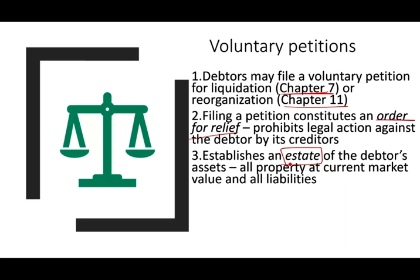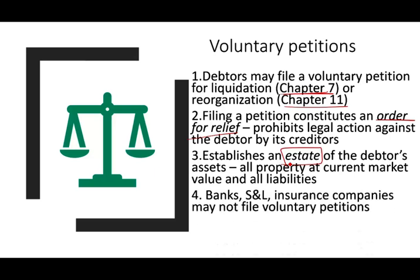Who cannot file for a voluntary petition for bankruptcy? Banks, savings and loans, and insurance companies may not file a voluntary petition. Why? Because they exist for the common good. They could have an involuntary petition filed against them, but they cannot voluntarily file.